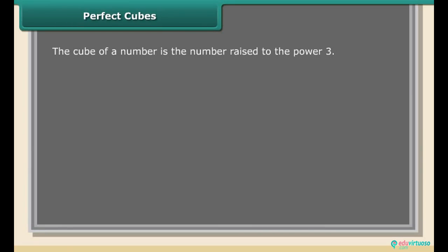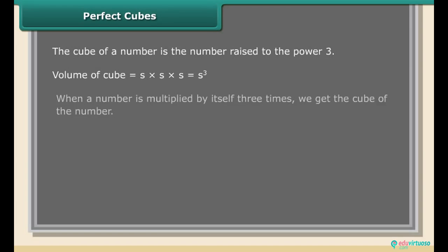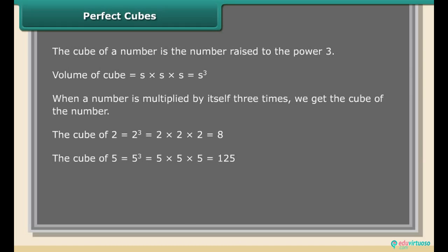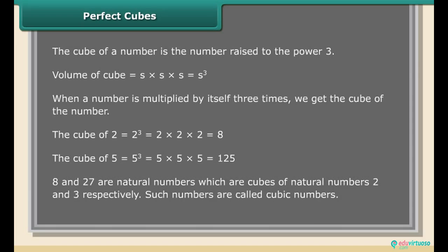The cube of a number is the number raised to the power 3. The volume of a cube is equal to s × s × s, which equals s³. When a number is multiplied by itself three times we get the cube of the number. The cube of 2 is 2³ = 8, and the cube of 5 is 5³ = 125. Numbers like 8 and 27, which are cubes of natural numbers 2 and 3 respectively, are called cubic numbers.